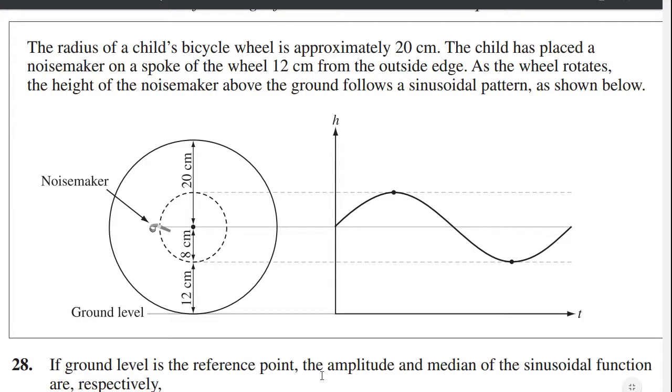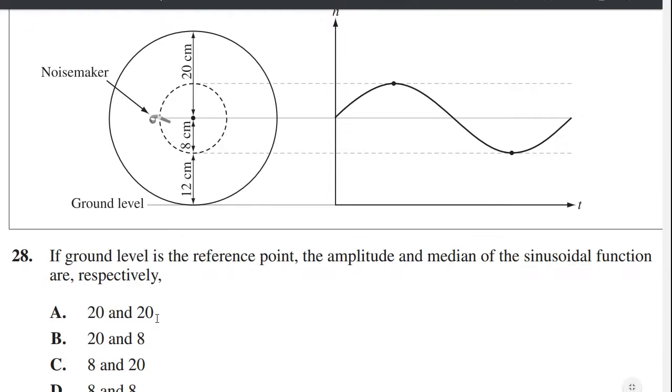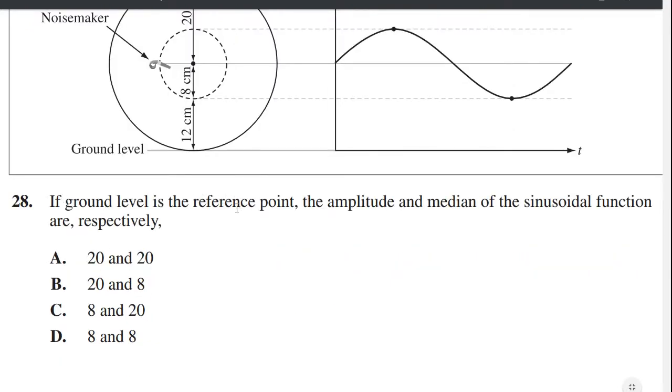The radius of a child's bicycle wheel is approximately 20 centimeters. The child has placed a noisemaker on the spoke of the wheel 12 centimeters from the outside edge. So we have a bicycle wheel that's 20 centimeters in radius. And from the outside edge of that circle, 12 centimeters away, is the noisemaker. As the wheel rotates, the height of the noisemaker above the ground follows a sinusoidal pattern as shown. If ground level is the reference point, the amplitude and the median of the sinusoidal function are.